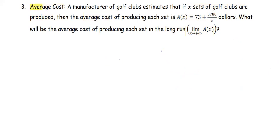For this problem, it's about the average cost. A manufacturer of golf clubs estimates that if x sets of golf clubs are produced, then the average cost of producing each set is a(x) = 73 + 5780/x dollars.